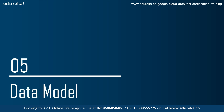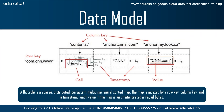Now let's look at the data model of Google Bigtable. A Bigtable is a sparse, distributed, persistent, multi-dimensional sorted map. The map is indexed by a row key, column key, and a timestamp. Each value in the map is an uninterpreted array of bytes. As a concrete example, suppose we want to keep a copy of a large collection of web pages and related information that could be used by many different projects. We call this particular table the webtable. In the webtable, we would use URLs as row keys, various aspects of web pages as column names, and store the contents of the web pages in the contents column under the timestamps when they are fetched, as illustrated in the figure.